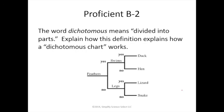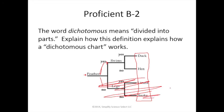Proficient question: the word 'dichotomous' means divided into parts — explain how this definition explains how a dichotomous chart works. This small dichotomous key has four possible answers: duck, hen, lizard, snake. Starting at the beginning with feathers, after the first question — does it have feathers or not — I either go yes or no. Whichever way I go, I'm cutting my options in half. If I say yes it has feathers, I'm eliminating half the options, then asking does it swim — yes or no — cutting out the remaining half and narrowing it down to one.